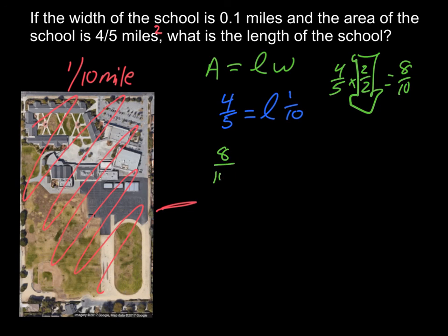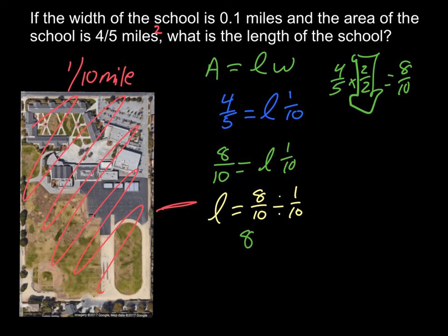So really what we have is 8/10, and we're saying 8/10 is the same as the length times 1/10. And if we divide it from there, we can break it down a little bit more. We can say that our length is the same as 8/10 divided by 1/10, which would give us 8 miles. Now, is our school really that big? No, it's not.